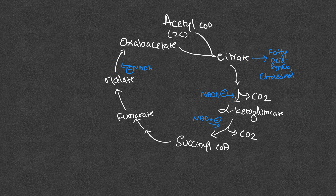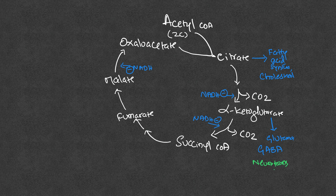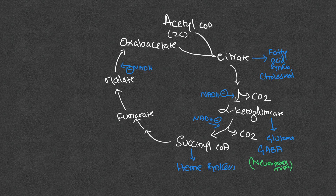Alpha-ketoglutarate can exit the TCA cycle to make the amino acid glutamate. From glutamate, you can also synthesize GABA (gamma-aminobutyric acid). Both glutamate and GABA are neurotransmitters, so TCA cycle intermediate alpha-ketoglutarate can be used for neurotransmitter synthesis. Additionally, succinyl-CoA, another TCA cycle intermediate, can go into heme synthesis.